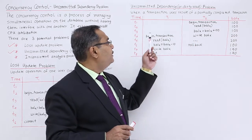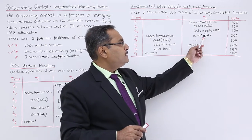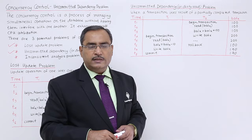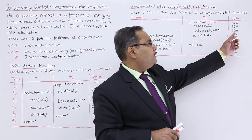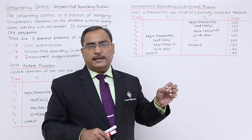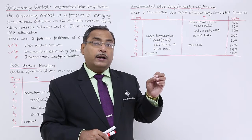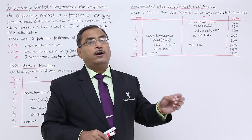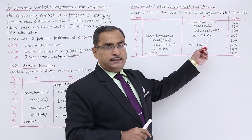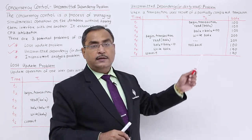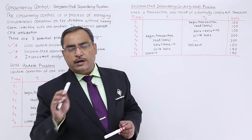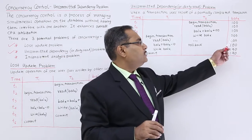So 100 has been read. At instant T3, balance X equals balance X plus 100, so now the balance X value has become 200 in memory. But the value has not yet been written back onto the database — only the memory instance has been updated to 200. At this particular instant, write balance X — the updated value of balance X has been written back onto the database, so now it has become 200.